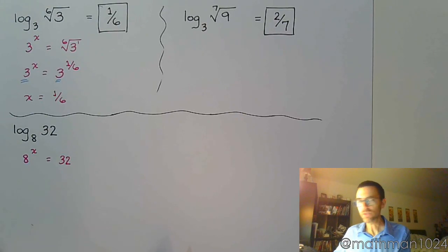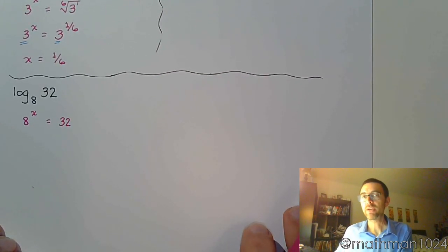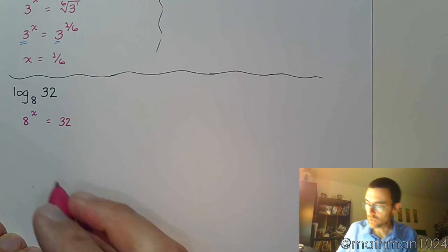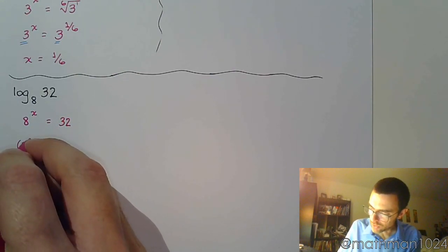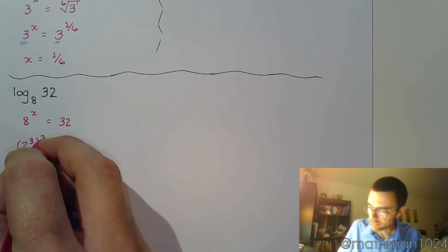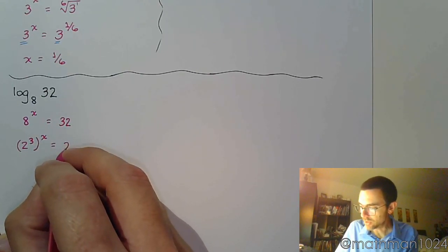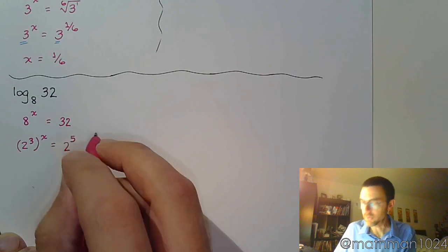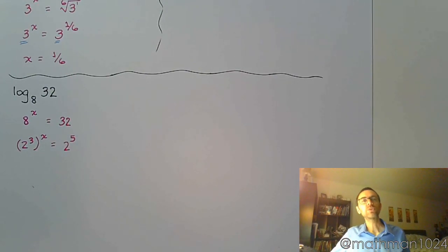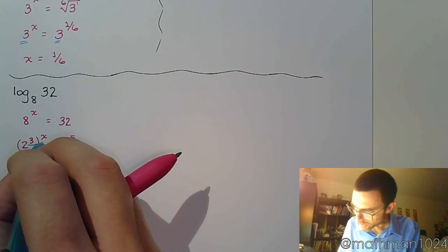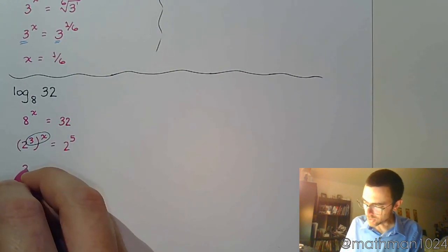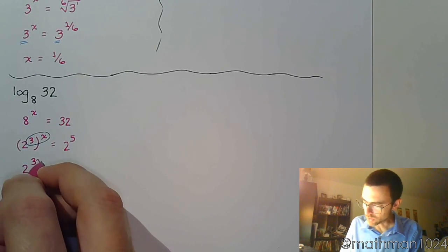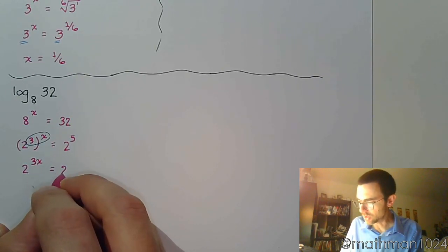Well, with practice, you guys will recognize that 8 and 32 have a common base of 2. So I can rewrite 8 to be 2 to the third, and I can rewrite 32 to be 2 to the fifth power. Practice with these guys. That way, when you see the numbers, you know what they're based off of. 32 is 2 to the fifth, okay? Now, you have power to power. So we multiply just like we did before.